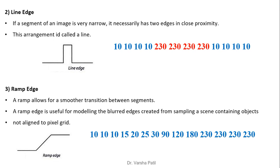A line edge occurs when a segment of an image is very narrow; it necessarily has two edges in close proximity. For example, one intensity on the left, a transition to high, another transition back to the same low intensity on the right. There are two high-frequency transitions (10 to 230 and 230 to 10) and three low-frequency regions. This is the line edge — two edges in close proximity.